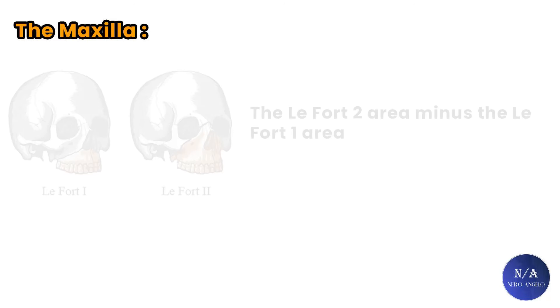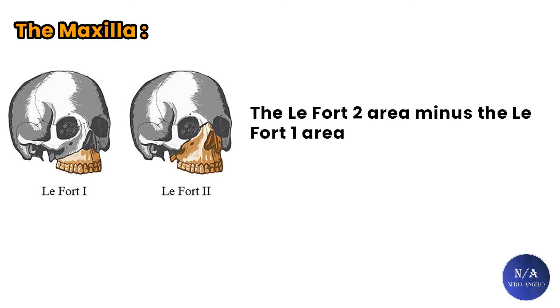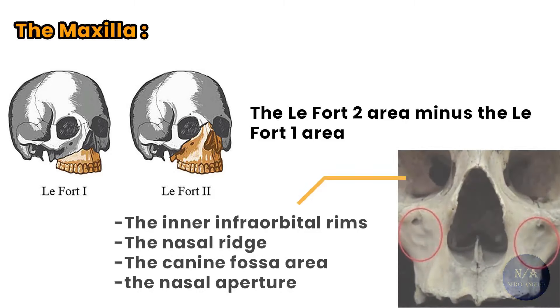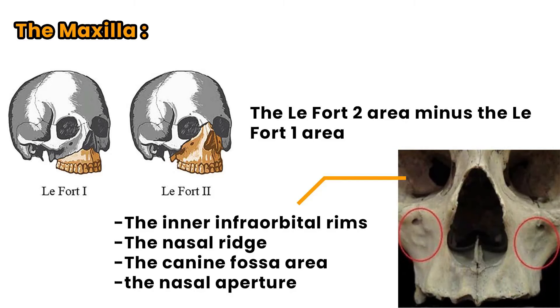Let's quickly recap what the maxilla is. The upper maxilla is essentially the Lefort II area minus the Lefort I area. The upper maxilla includes the inner infraorbital rims, the nasal bridge, the canine fossa area, and most importantly the nasal aperture.